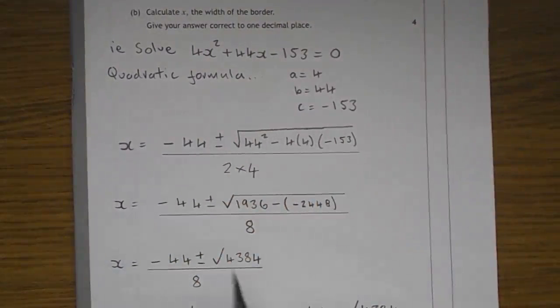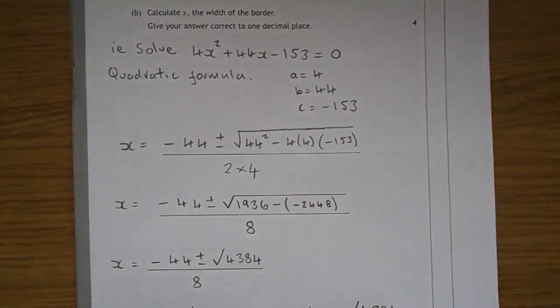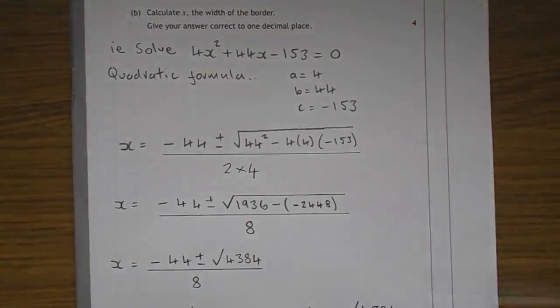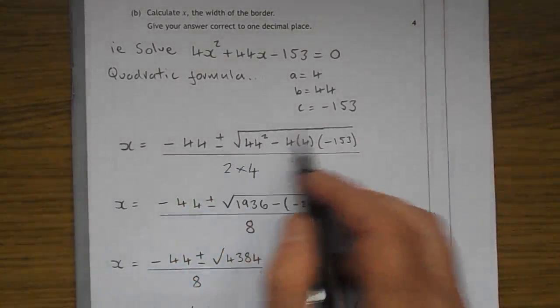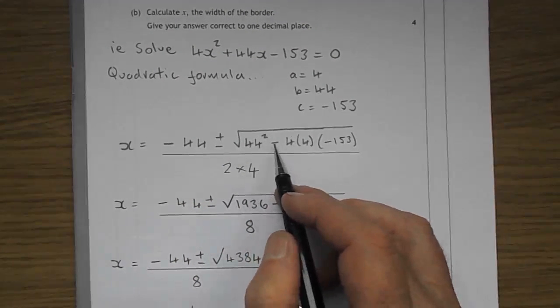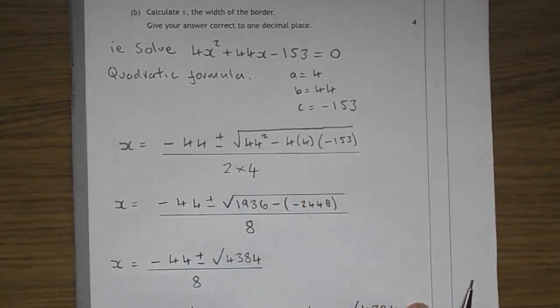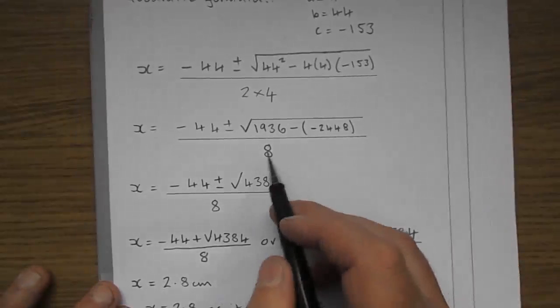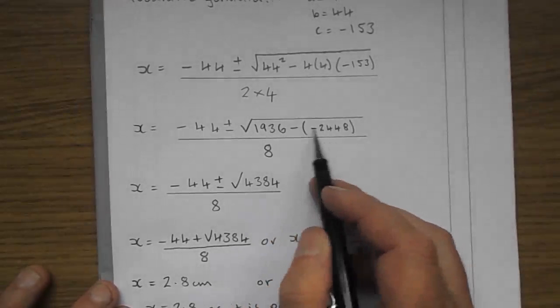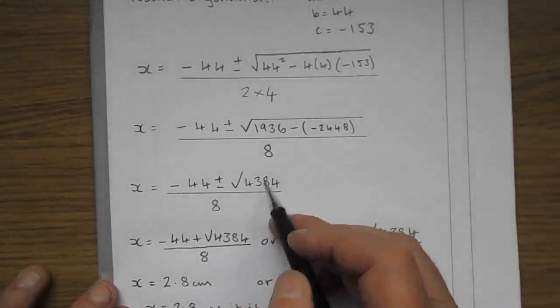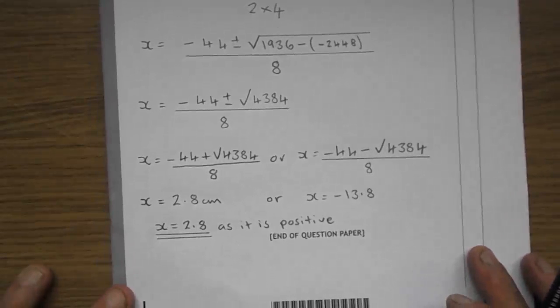You can see the working there. Minus B, plus or minus the square root of B squared, minus 4AC all over 2A. There we have it there. Minus 44, plus or minus the square root of B, 44 squared, minus 4 times A, 4 times C, minus 153. You have the minus, minus problem that you've probably seen quite often by now, which the latest means add, and you get 4384.